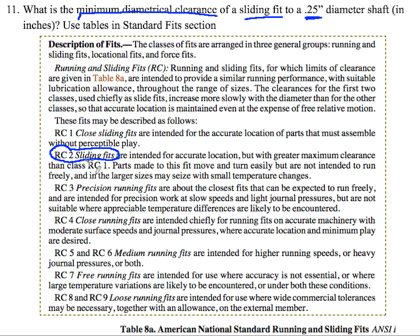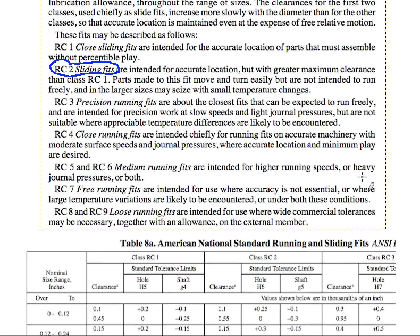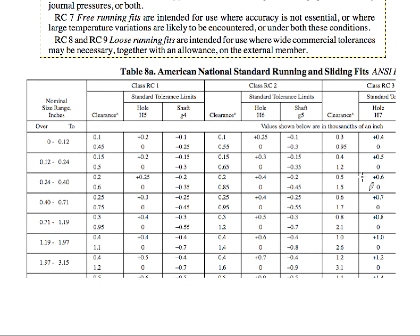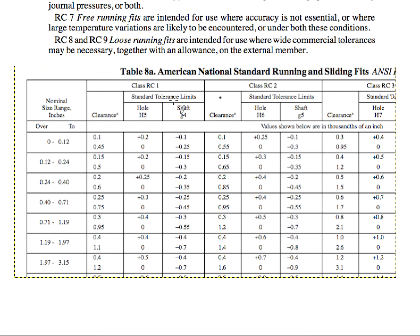Now we can look on Table 8 to get an idea of the clearances we want. Table 8 shows the American National Standard Running and Sliding fits. We have classes — in this case we're showing class RC1, RC2, and slightly of RC3. In our case we want to use RC2.